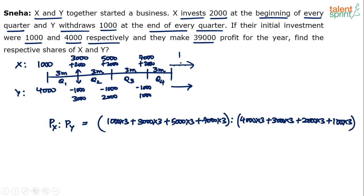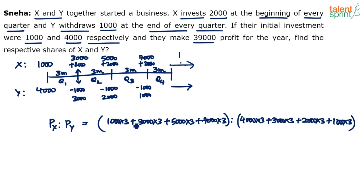That's it — now do the calculation and divide 39,000 in that ratio. As I always say, cut down steps on paper. All the thousands cancel in the ratio, and the 3s cancel since it's a quarterly calculation on both sides. So smart people just write 1+3+5+7 to 4+3+2+1 — no need to write all the zeros.